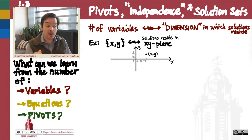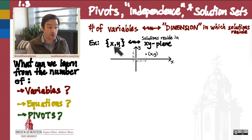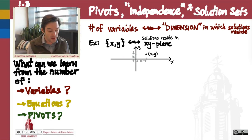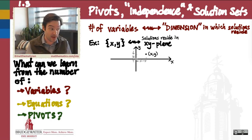For example, if I have a linear system with two unknowns, x and y — so there are two variables that I want to solve for — then we can think of the values of those two variables, each of which is going to be a real number, as determining, via an ordered pair, a point inside of the Cartesian xy-plane, the plane in which we usually do our graphing in algebra.